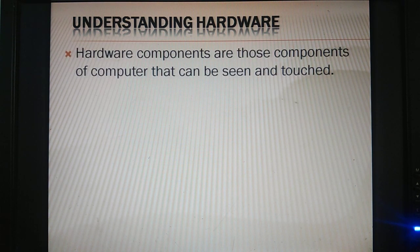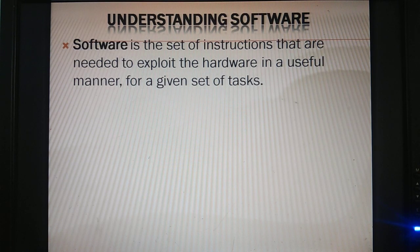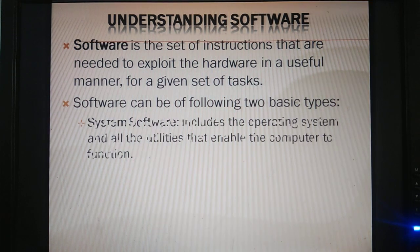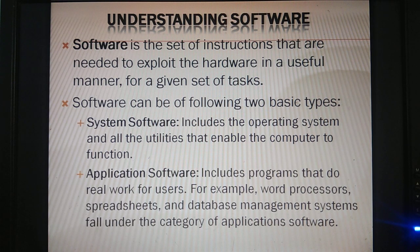Hardware components are those components of the computer that can be seen and touched — which we can see and feel — like a monitor, a keyboard, a mouse. Software is a set of instructions which we cannot see, but we can feel that it performs any set of tasks. We have two basic types of software: system software and application software.